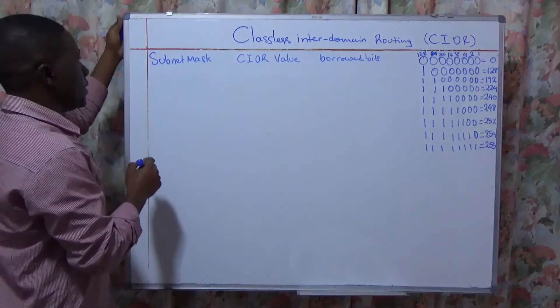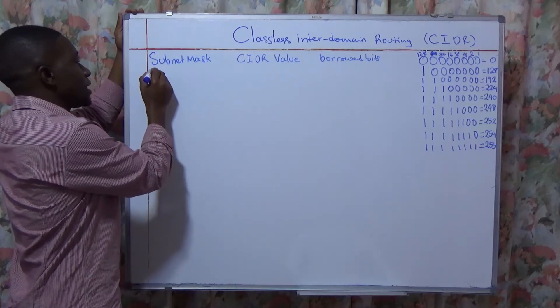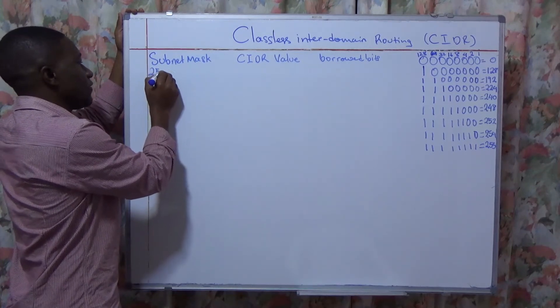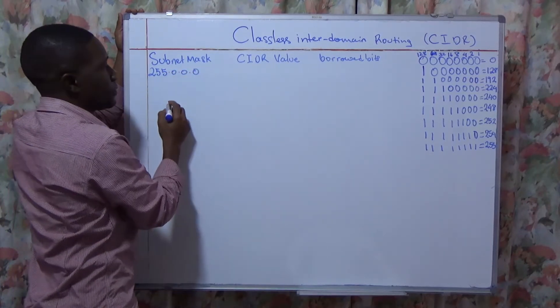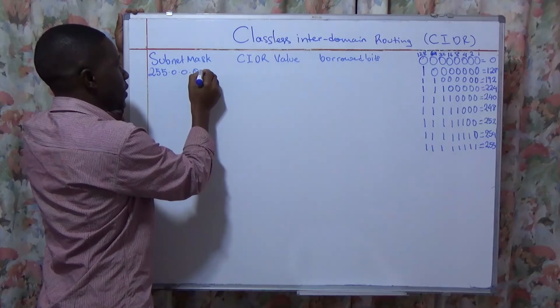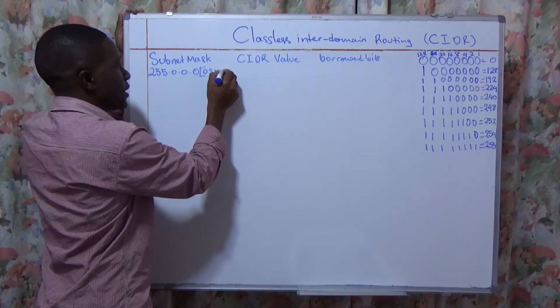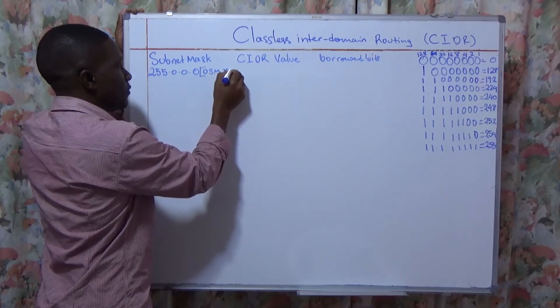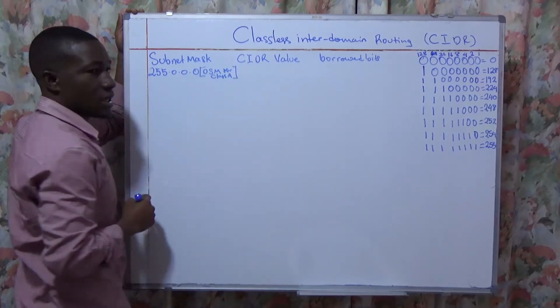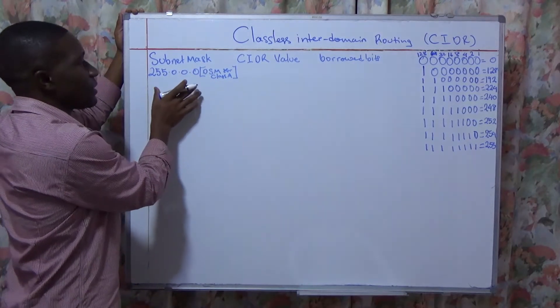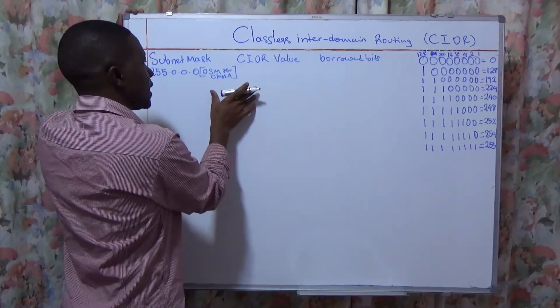In Class A, the default subnet mask is 255.0.0.0. So this one is the default subnet mask for Class A. Now when I have a default subnet mask for Class A, the CIDR value at Class A is /8.